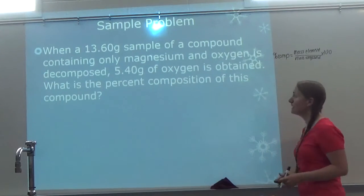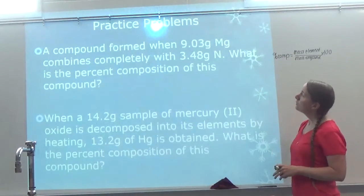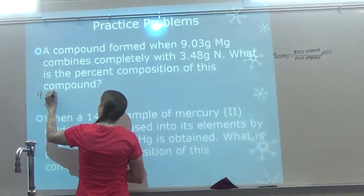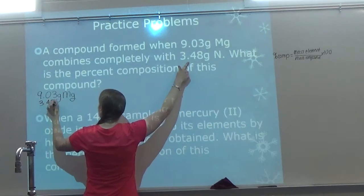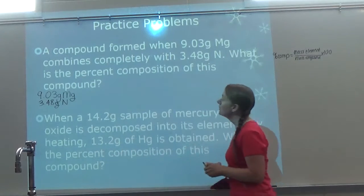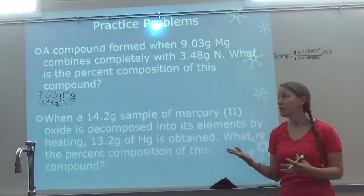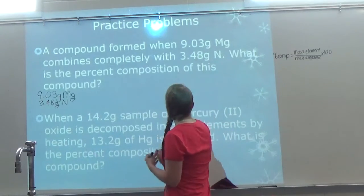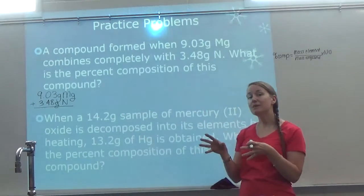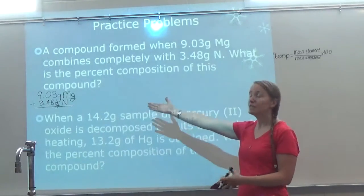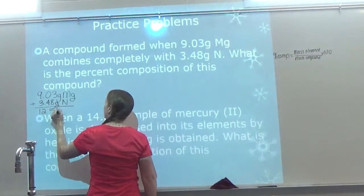Let's look at a couple more examples. A compound formed when 9.03 grams of magnesium combines completely with 3.48 grams of nitrogen. What is the percent composition of this compound? Notice here they gave me both elements but didn't give me the whole compound. Since magnesium and nitrogen bonded to make the compound, I can just add the two to get the compound amount. If you're missing one element, do compound minus element to get the other. If you're missing the total compound, just add your elements together. Adding gives us 12.51 grams for our whole compound.